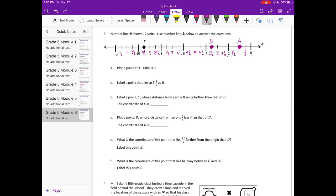Label a point C whose distance from 0 is 8 units further than that of B. So B is 3 and 1 half, and we want 8 units further from B, distance from 0. So I'm going to add 8 to that and get 11 and 1 half. So C is going to be at 11 and 1 half.